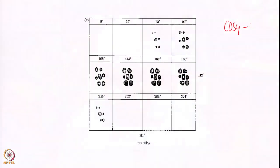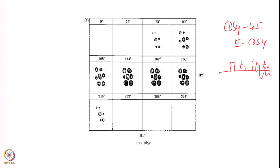Now we are going to invoke a different kind of experiment to simplify the cross peak fine structure. This is called COSY 45, or one can also use what is called E-COSY. COSY 45 is simply a modification from the COSY experiment. The COSY experiment has normally this sequence here: t1, t2. COSY 45 means this flip angle is 45 degrees — this is 90 degrees and this angle is 45 degrees. You can also use a smaller angle, such as 30 or 40 degrees, but a smaller angle, not 90 degrees.